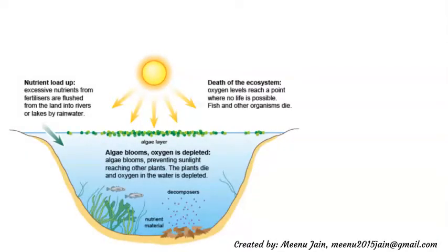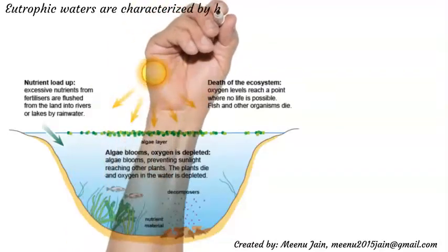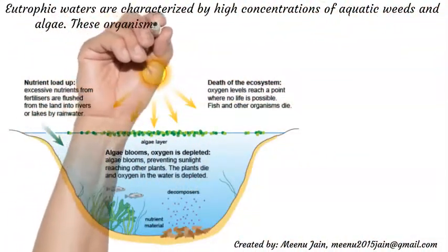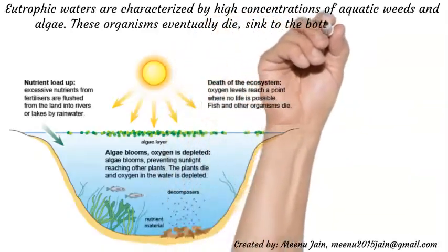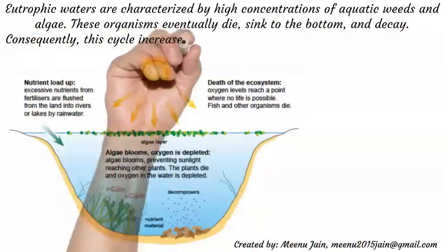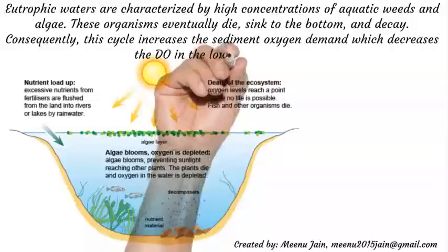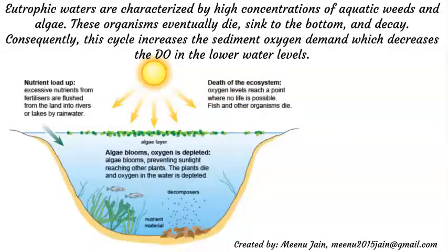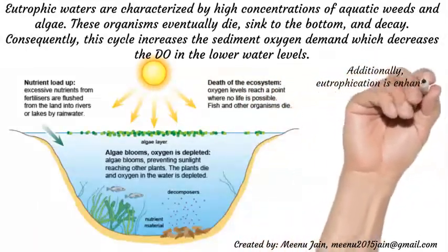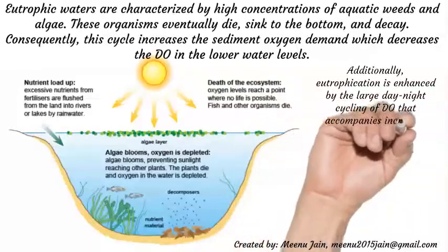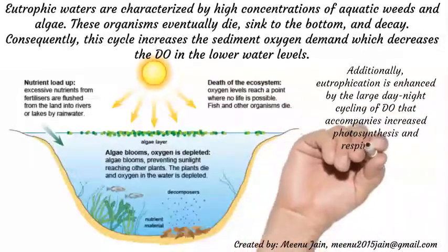Eutrophication is the natural aging process of a body of water as biological activity increases. Eutrophic waters are characterized by high concentrations of aquatic weeds and algae. These organisms eventually die, sink to the bottom, and decay. Consequently, this cycle increases the sediment oxygen demand, which decreases the dissolved oxygen in the lower water levels. Additionally, eutrophication is enhanced by the large day-night cycling of dissolved oxygen that accompanies increased photosynthesis and respiration.